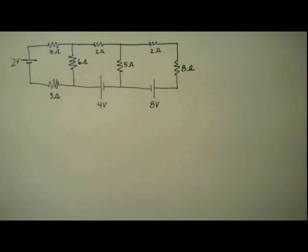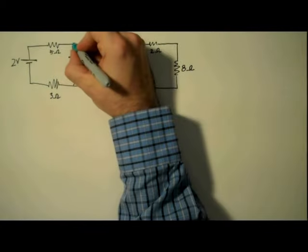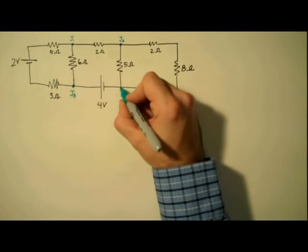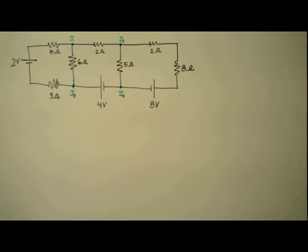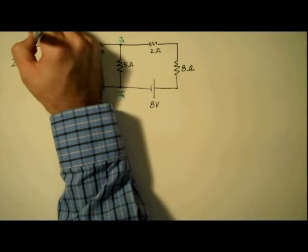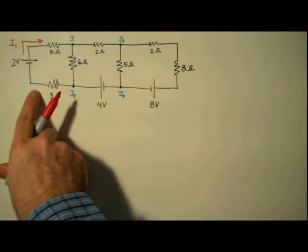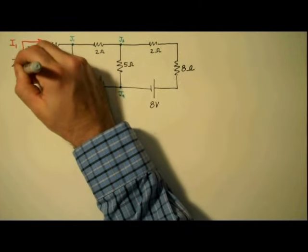When using Kirchhoff's rules to analyze a circuit, we always start by labeling our junctions, and then our currents, and then our loops. Starting with our junctions, we have J1, J2, J3, and we'll call this J4. Moving on to currents, we'll start with the current coming out of the two volt battery, we'll call that I1. And since any amount of current leaving a battery must necessarily re-enter the battery, we'll call this I1 as well.